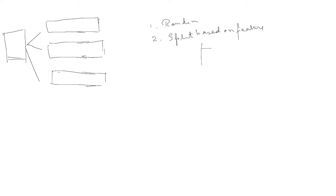Splitting based on features means, for example, one ensemble just for continuous variables and another for categorical variables. When splitting randomly, you can split both by features as well as by rows. Splitting by features randomly or splitting by rows are both valid approaches.